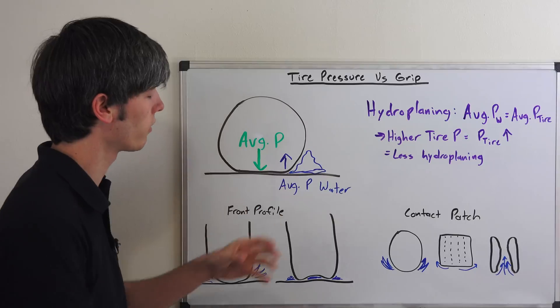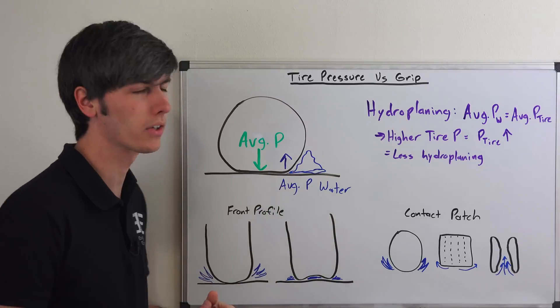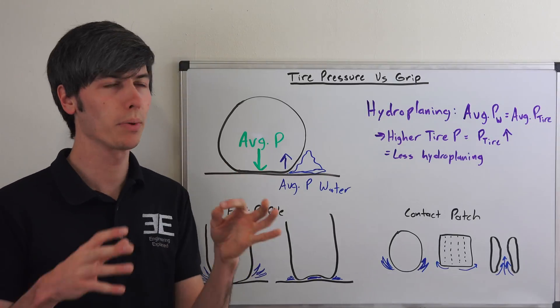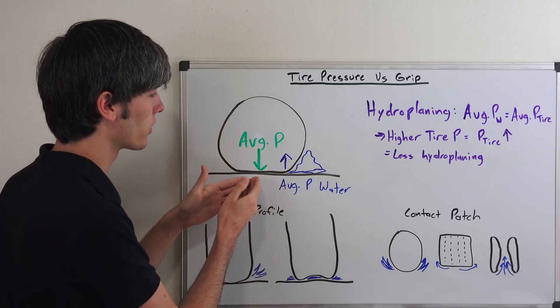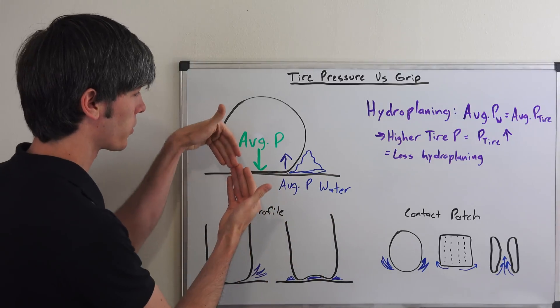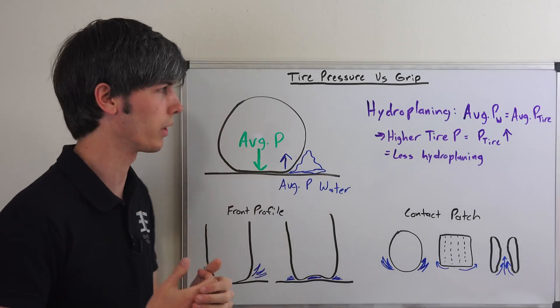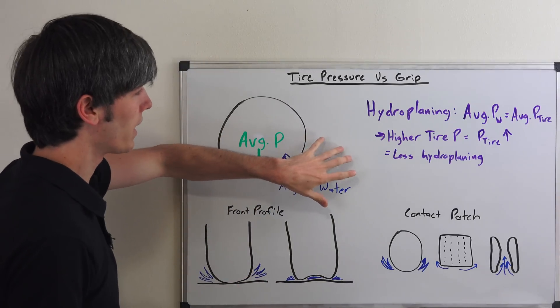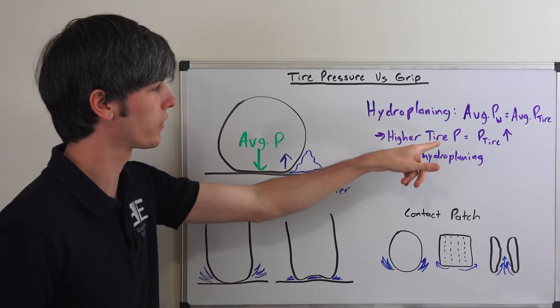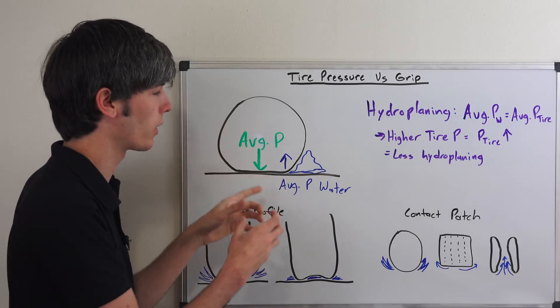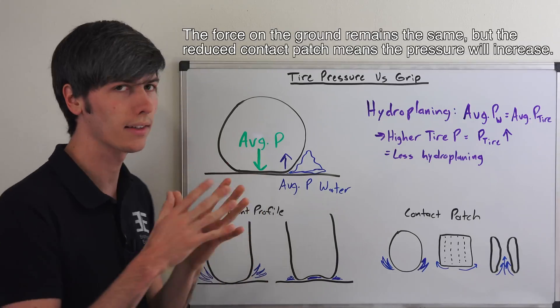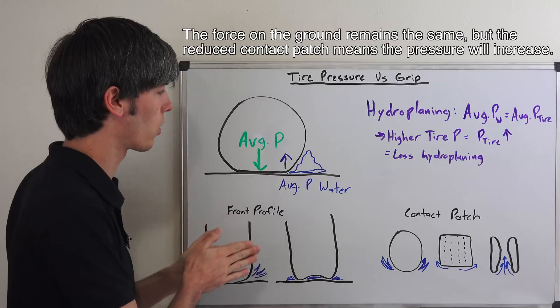So, we've got our tire here, and it's traveling, and there's water on the ground, which piles up in front of the tire, and that tire has to move that water out of the way, in order to maintain grip with the ground. So, hydroplaning occurs when the average pressure of the tire on the ground is equal to the average pressure of the water pushing back up on that tire. That makes sense, because if they're equal, it means it's basically going to be floating. So, now, keeping that in mind, a tire's pressure will directly affect its average pressure it's putting down on the ground.